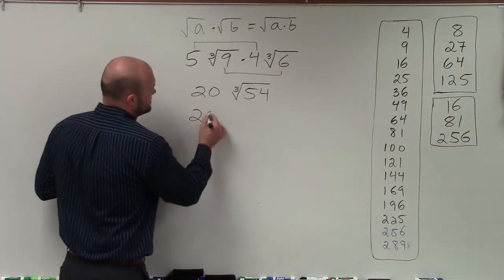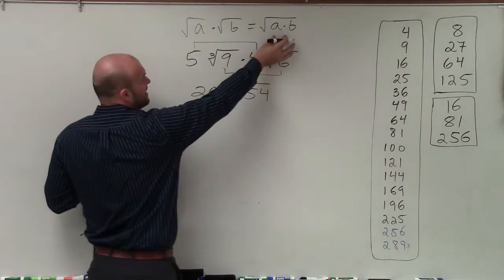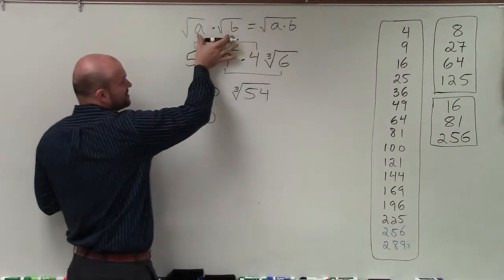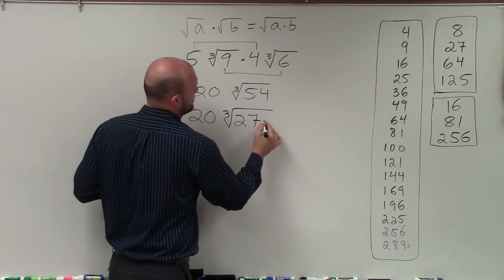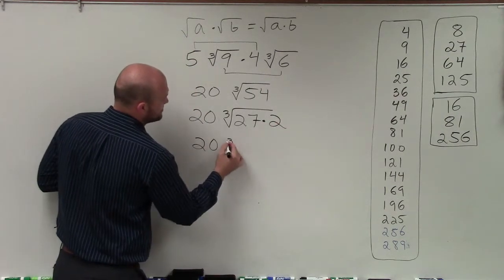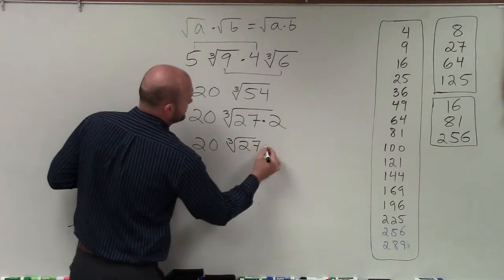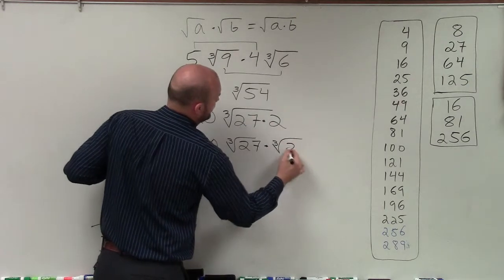Therefore, I'll rewrite this as 20. I'm going to rewrite it as the product of two terms to separate it. So that would be the cube root of 27 times 2, which I can now write as 20 times the cube root of 27 times the cube root of 2.